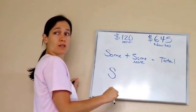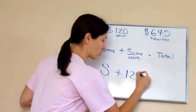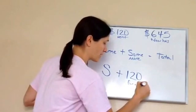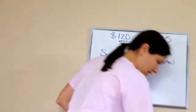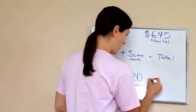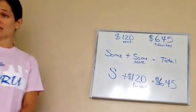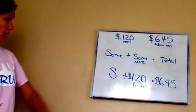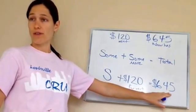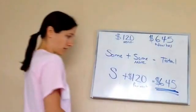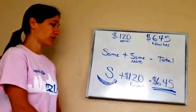She had some money we don't know, but then she received 120 dollars for rent. And the problem says Hannah now has 645 dollars. So the equation is: something plus 120 equals 645. This is the total amount she has, but she had some money before she got paid rent.